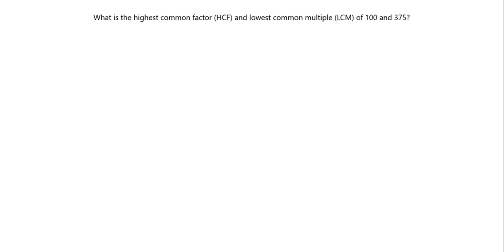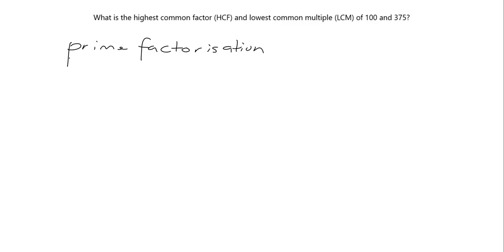But if we get to numbers like 100 and 375 and want to find the highest common factor and lowest common multiple, those methods are going to take far too long. It's far too tricky to work with these big numbers, doing all the multiplying and finding all the factors. So what we do is use prime factorization, and I'm going to remind you how we use prime factorization to find the LCM and HCF.